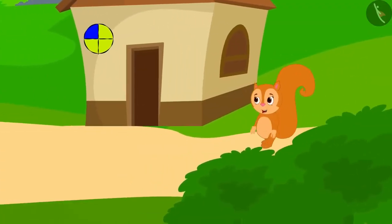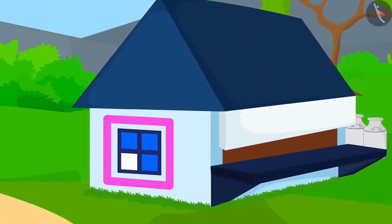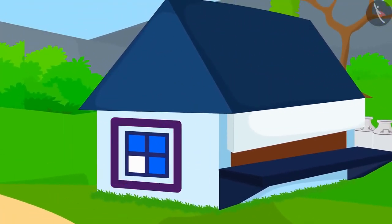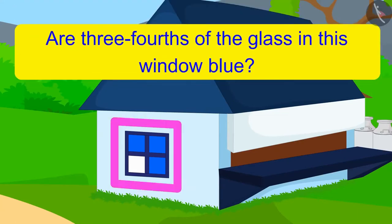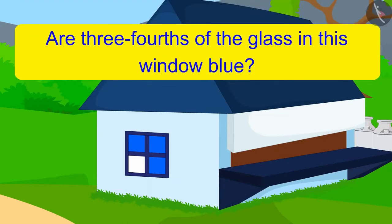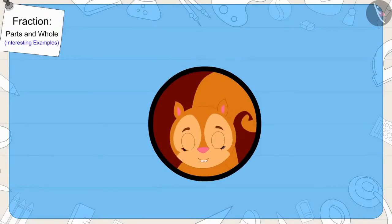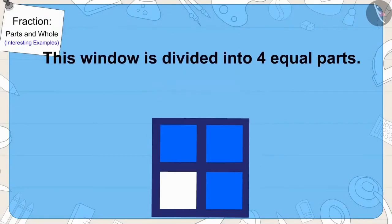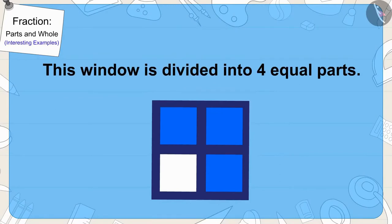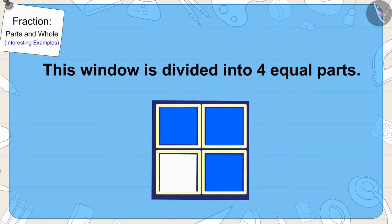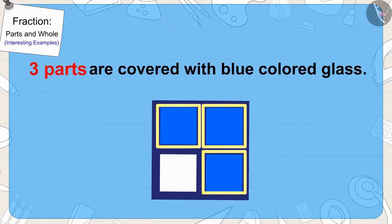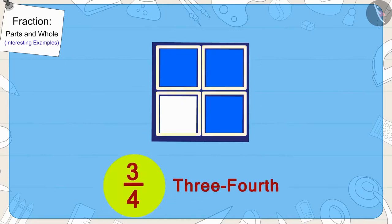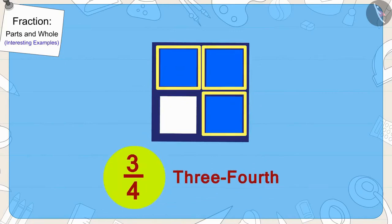Now, Chanda started looking for that window. She finally saw such a window. Are three-fourths of the glass in this window blue? You can stop the video to find the answer. Yes, your answer is absolutely correct. This window is divided into four equal parts, out of which three parts are covered with blue-colored glass. In this way, three-fourths of the window has blue glass.